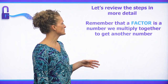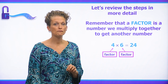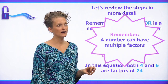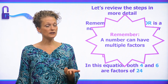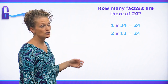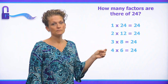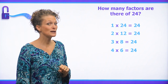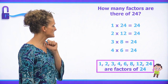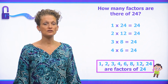Let's review these steps in more detail. Remember that a factor is a number that we multiply together to get another number. So four and six are factors of 24. A number can have multiple factors. Let's find all of the factors of 24: one times 24, two times 12, three times eight, and four times six. So one, two, three, four, six, eight, 12, and 24 are the factors of 24.